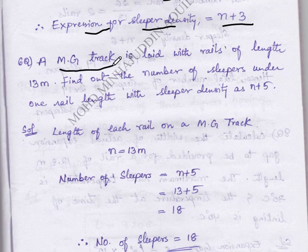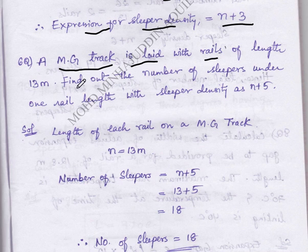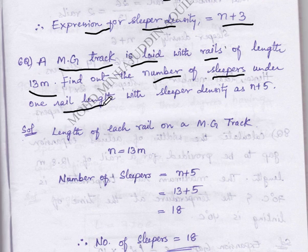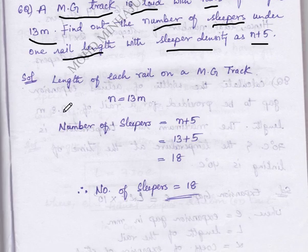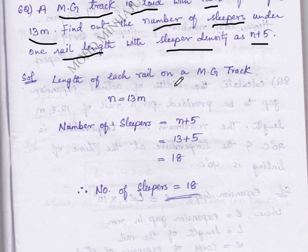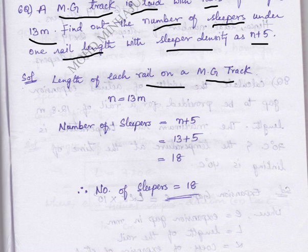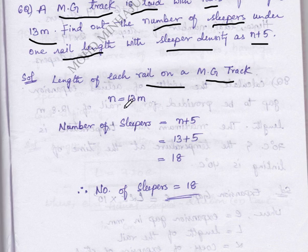A meter gauge track is laid with rails whose length is given. We have to calculate the number of sleepers for rail length with sleeper density given as n plus 5. To calculate number of sleepers, first consider the length of each rail on meter gauge. On Indian railways there are three types of tracks: meter gauge, broad gauge, and narrow gauge. For meter gauge track, the n value is 13 meters.